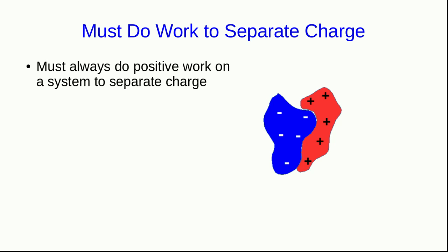This is an example of what always happens whenever we separate charge by any means. We must do work in order to separate the charge, and that work is always positive work on the system of the things that are being charged.